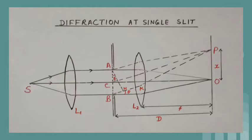According to Huygens' principle, each point on the portion of the plane wave front AB becomes a source of secondary wavelets which propagate in all directions.